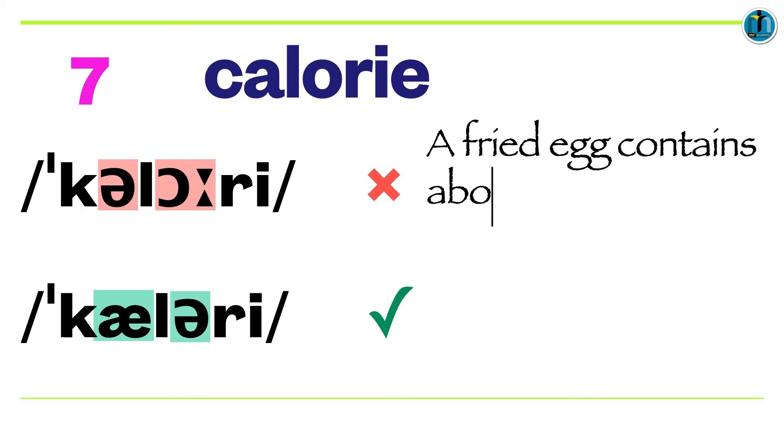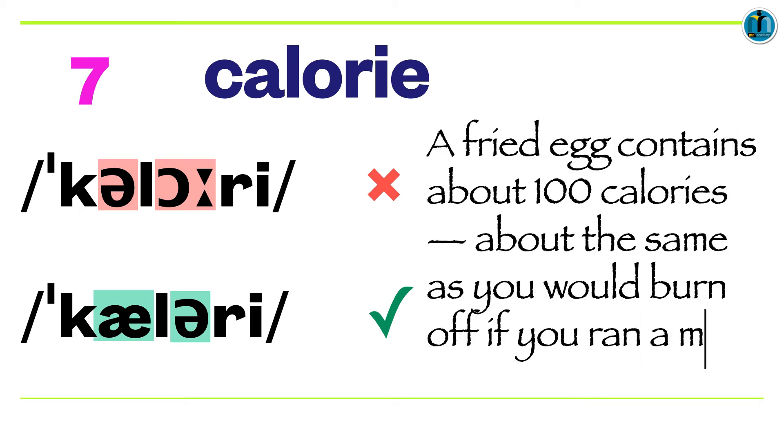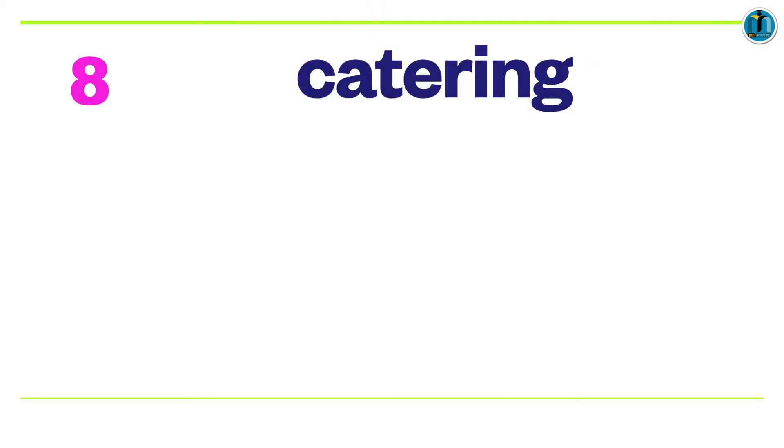Here's an example: A fried egg contains 100 calories, about the same as you would burn off if you ran a mile. Number eight.